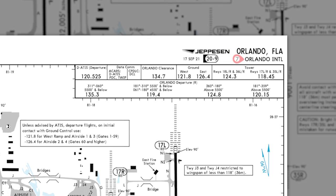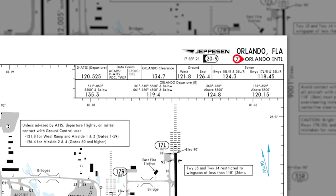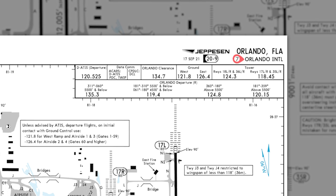That means the revision date or issuance date — the date that you received the chart — becomes effective. Number seven is the actual airport name, in this particular case Orlando slash International.